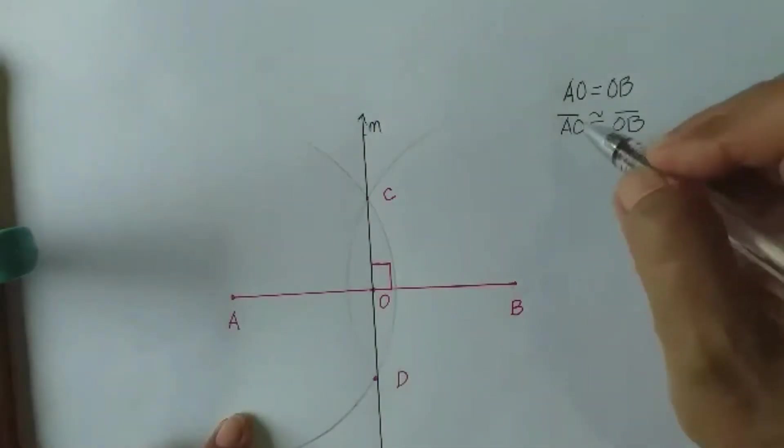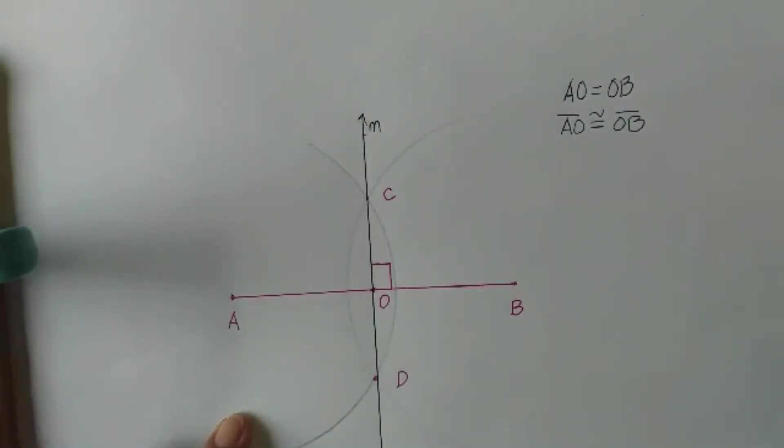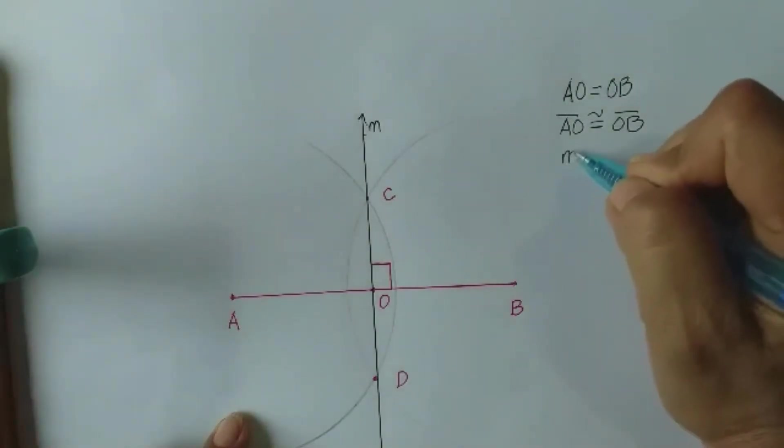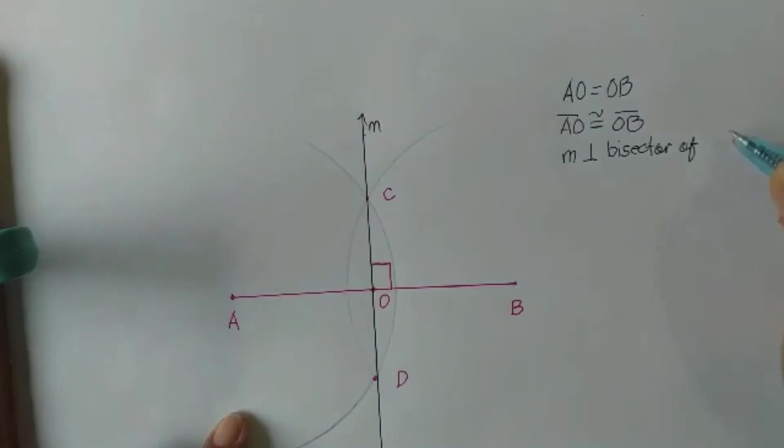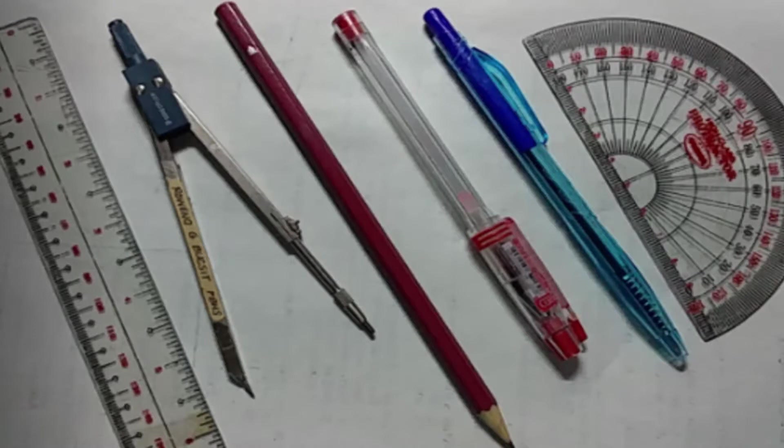Segment AB is perpendicular at segment CD, and m now is our perpendicular bisector. So again, m is the perpendicular bisector of segment AB.